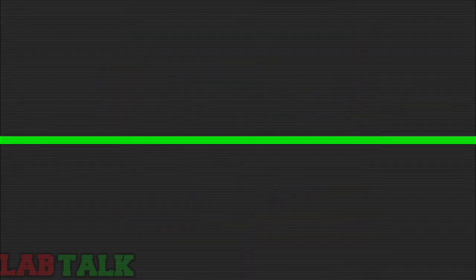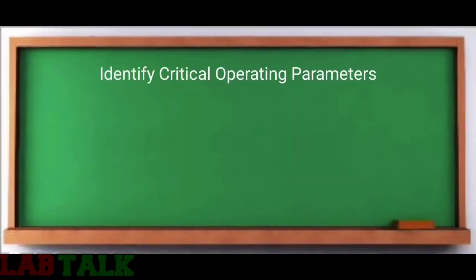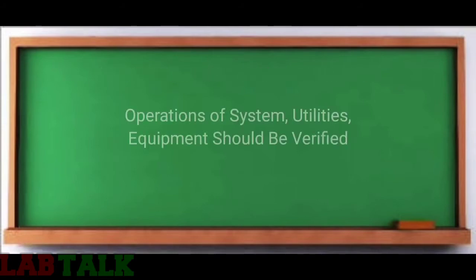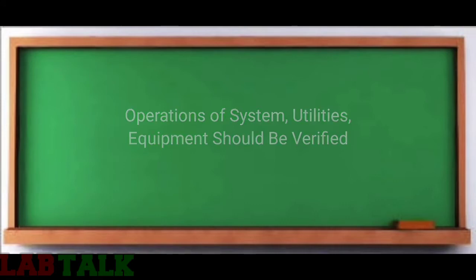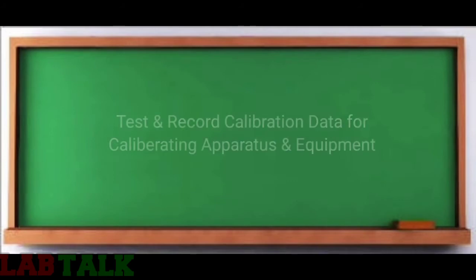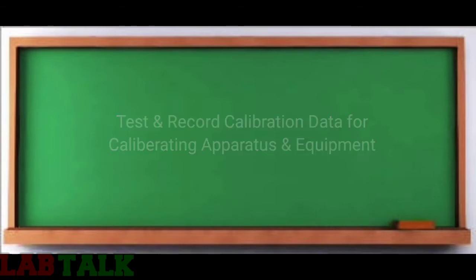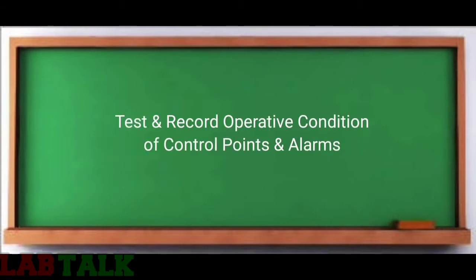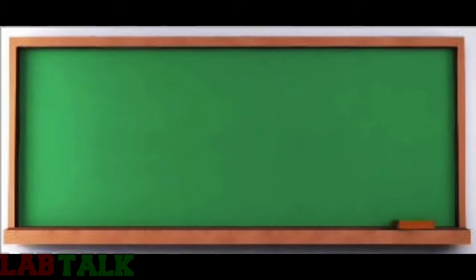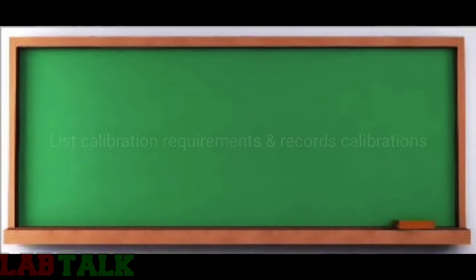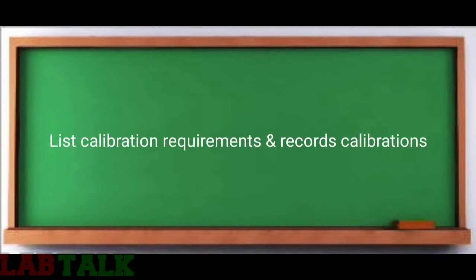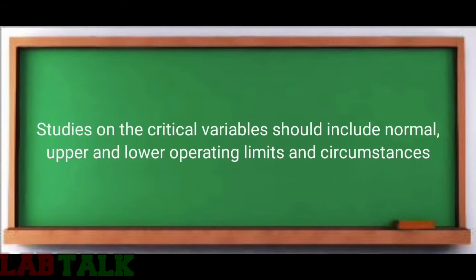Coming to the step-by-step procedure: critical operating parameters should be identified for the equipment. Systems, utilities, and equipment should operate correctly, and their operations should be verified in accordance with the OQ protocol. Test and record calibration data for calibrating apparatus and instruments. Test and record operative conditions of control points and alarms, test and record outputs, list calibration requirements for the system under test, and maintain records of calibration.